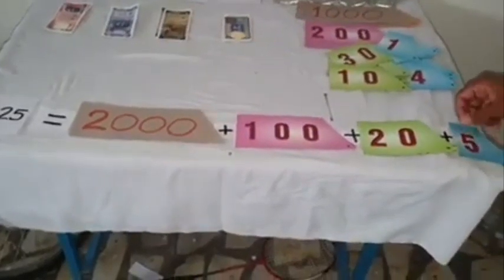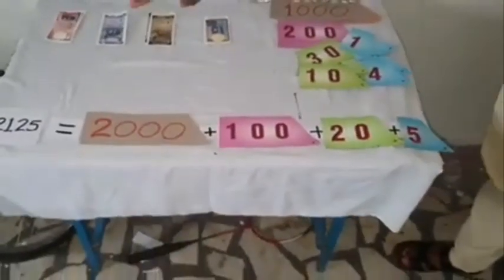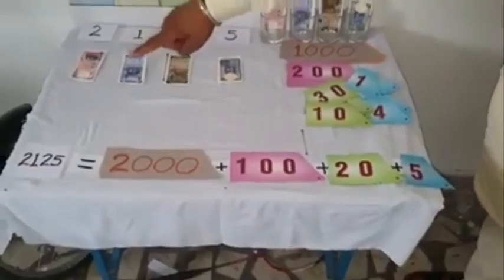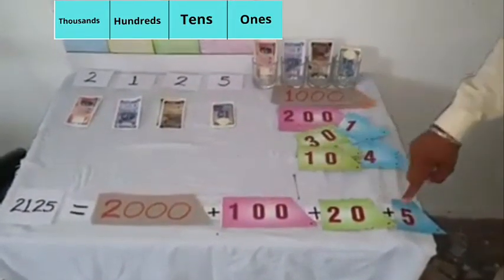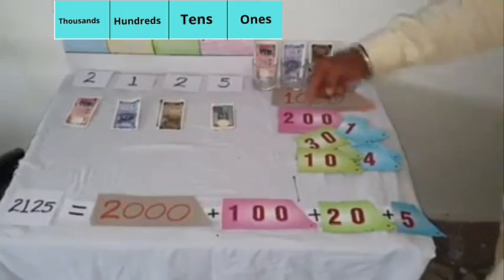Again, we see 2,125 is equal to 2,000 plus 100 plus 20 plus 5. So, this is the expanded form of this number.